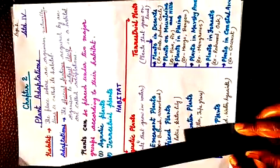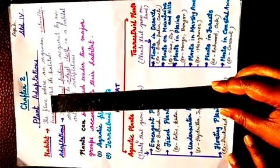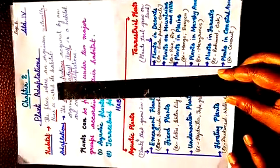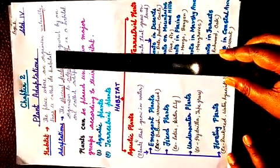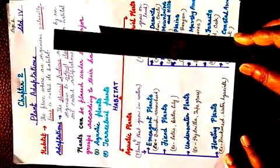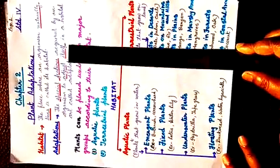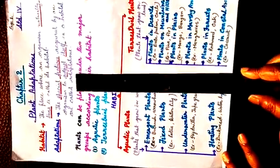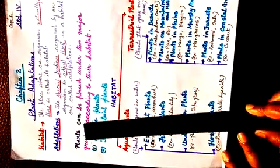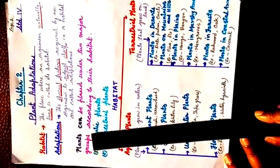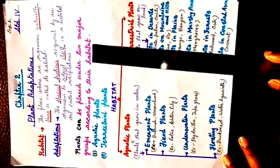Again I repeat it: habitat — the place where an organism naturally lives is called its habitat. And adaptation — the special features acquired by an organism to adjust itself in a habitat are called adaptation. Plants can be placed under two major groups according to their habitat.